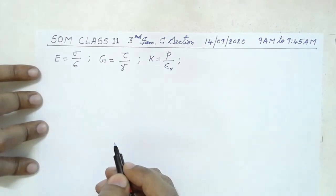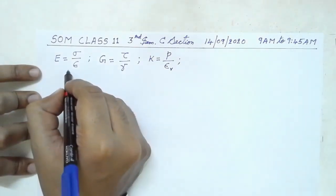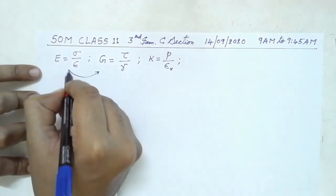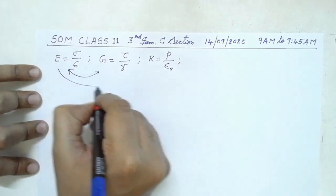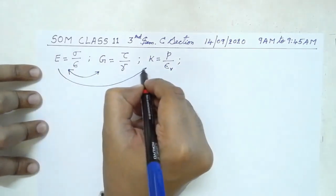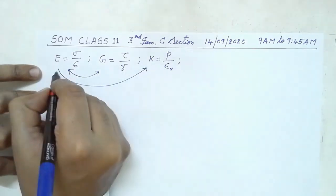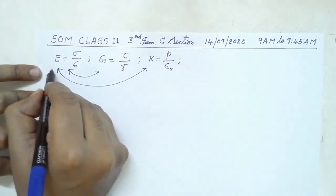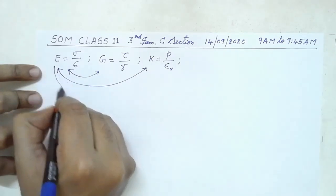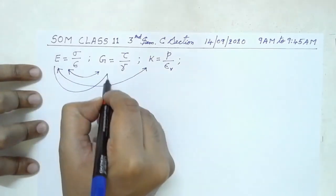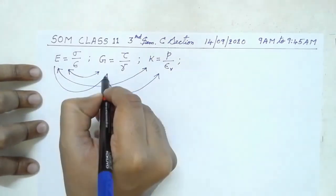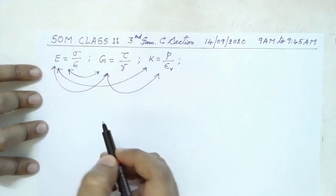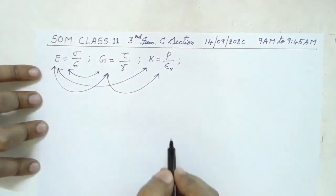that constant is known as bulk modulus and that is equal to hydrostatic pressure P divided by volumetric strain. Now what I will do is, I will derive one equation relating E and G, then another equation relating E and K, then another equation which will relate all the three. So three derivations I will do in this class.